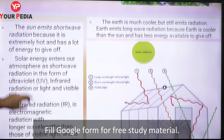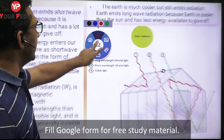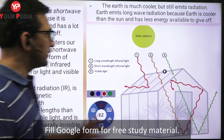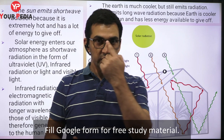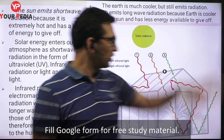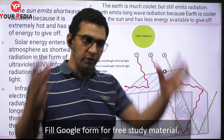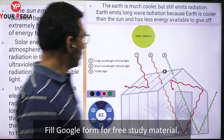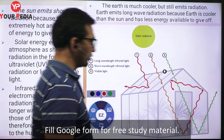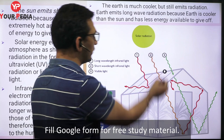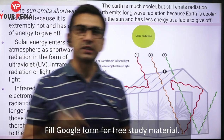Let us talk about the greenhouse effect - how temperature inside that particular greenhouse increases. We will discuss this first in the context of a greenhouse, and then the same mechanism will be applicable when we consider the earth as a whole. In this glass structure, solar radiations coming from the sun are in different wavelengths.